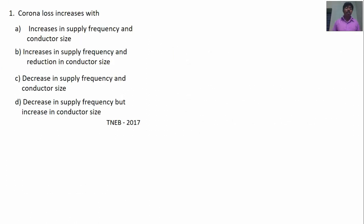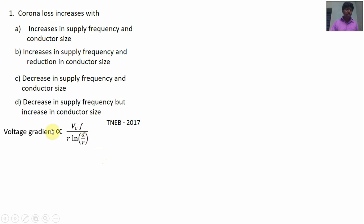These topics are asked in TNEB examinations. First question: corona loss increases with increase in supply frequency — is this correct? Since voltage gradient is directly proportional to supply frequency, if supply frequency increases, voltage gradient increases, and corona effect increases. This is correct. Now, if conductor size is increased, voltage gradient decreases, so corona will decrease. Therefore the first option — increase in conductor size causing increase in corona — is wrong. Second option — increase in supply frequency and reduction in conductor size — if conductor size is reduced, voltage gradient increases, corona loss increases. So option B is correct.